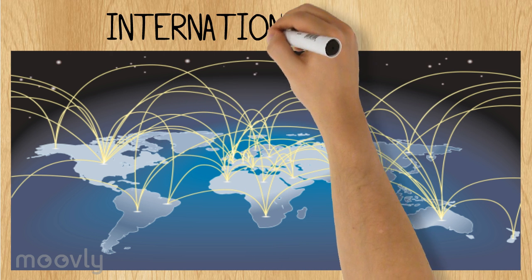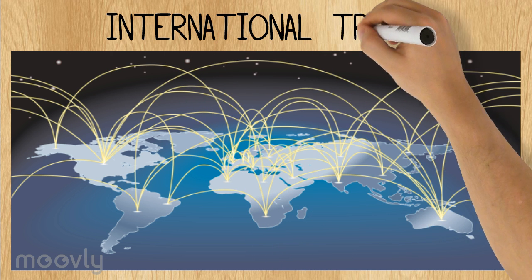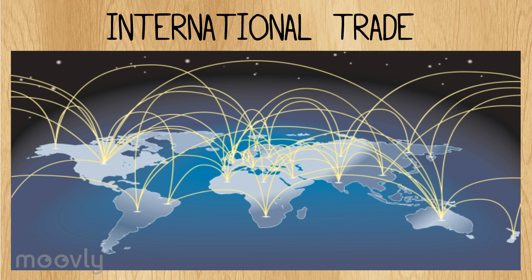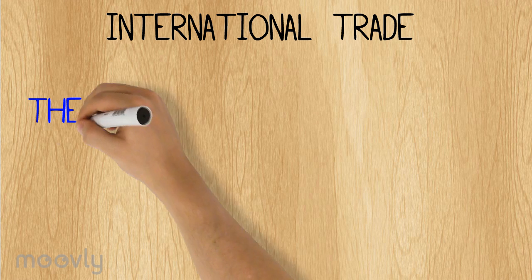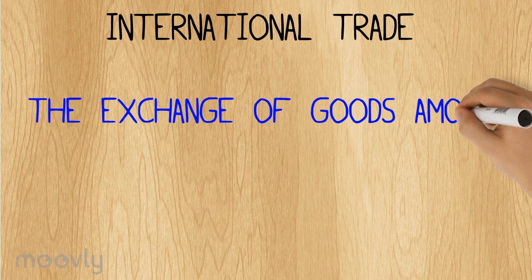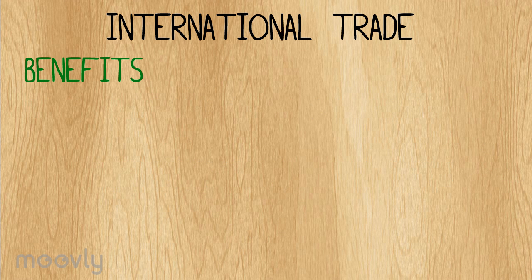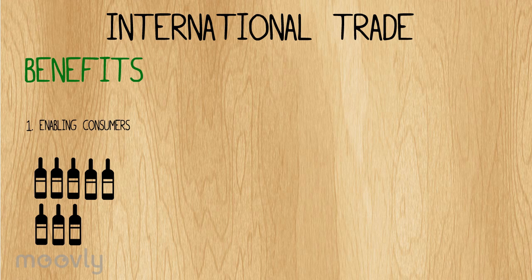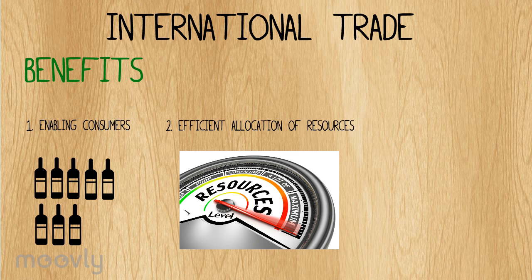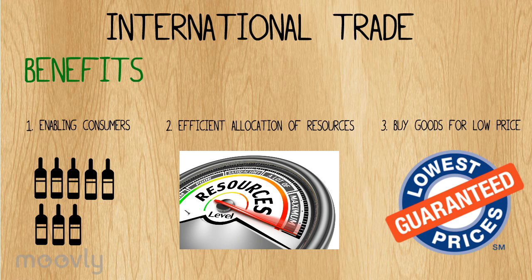This video will analyze and examine international trade. International trade is the exchange of goods among international borders. International trade can have many benefits, such as enabling consumers to have a larger choice of products, allowing a more efficient allocation of resources, and most importantly, allowing consumers to buy goods for a lower price.